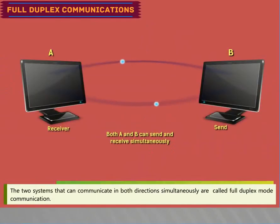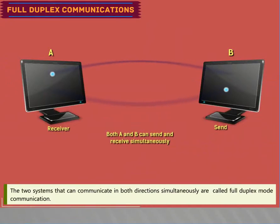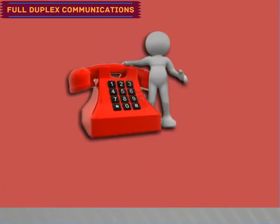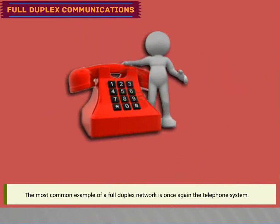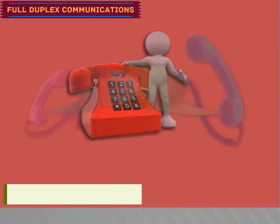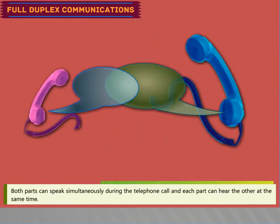Full duplex communications allows two systems to communicate in both directions simultaneously. The most common example of a full-duplex network is the telephone system, where both parties can speak simultaneously and each can hear the other at the same time.